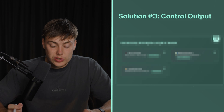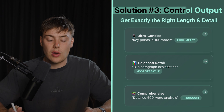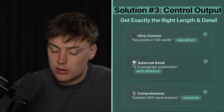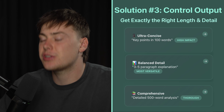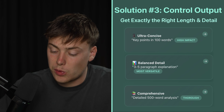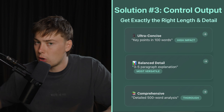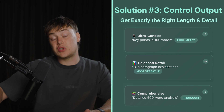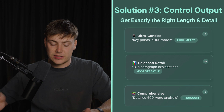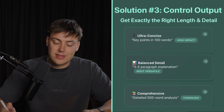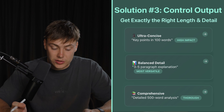Moving on to solution number three, and this is something I don't see many people using, but it's actually really important. It's something I subconsciously use on a regular basis to get better responses, and this is controlling your output. We can run a prompt and get pages and pages of information back, but maybe we just want one specific element, or maybe we just want dot points to help us make a better decision, or maybe we do want a huge analysis. You've got to tell it the right length and detail to get the best response.